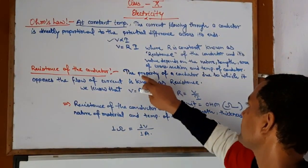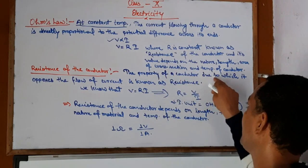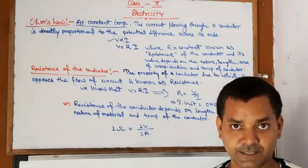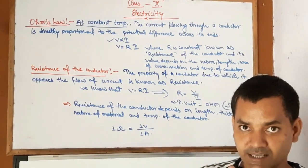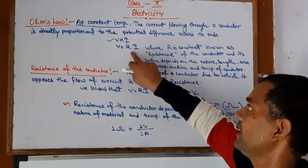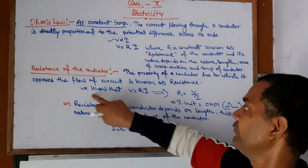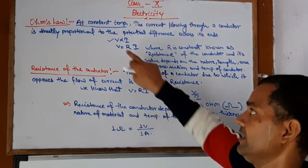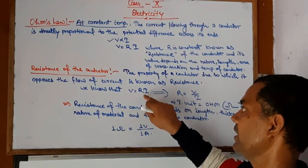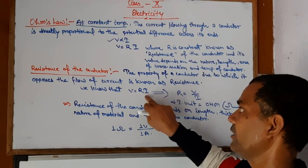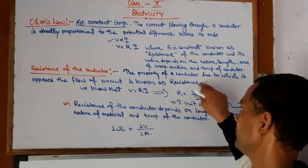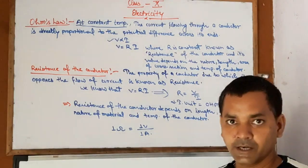The property of a conductor due to which it opposes the flow of current is known as resistance. We know that V = RI. Modifying this for R: since I is multiplying, it goes to the other side and divides. So the formula becomes R = V / I.